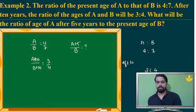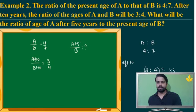I am going to multiply 3 is to 4 by 2, giving 6 is to 8 — that's not working, since 4 plus 2 doesn't fit. Let me try 3 is to 4 multiplied by 3, giving 9 is to 12. Now I can see 4 plus 5 is 9, and 7 plus 5 is 12.